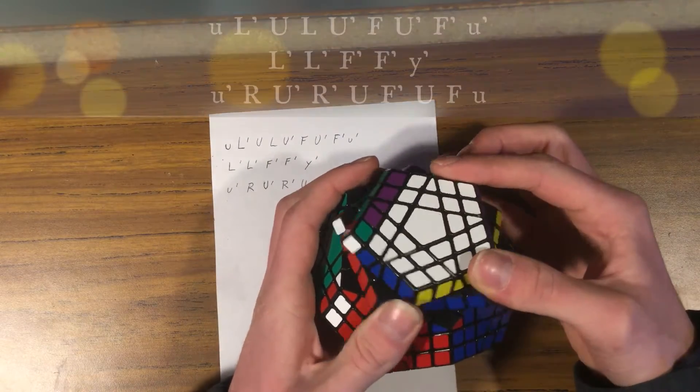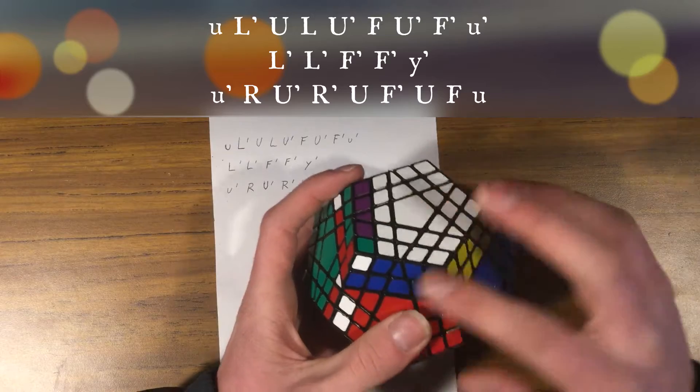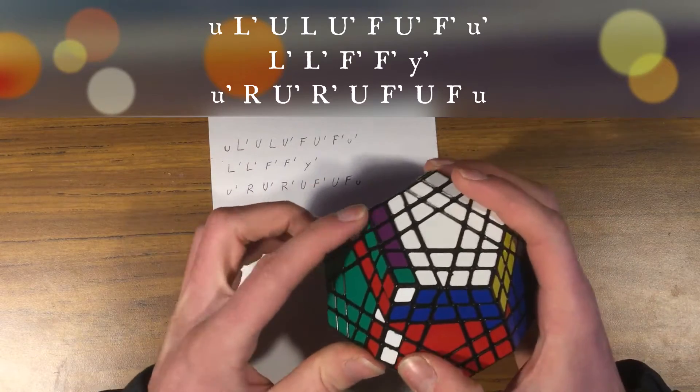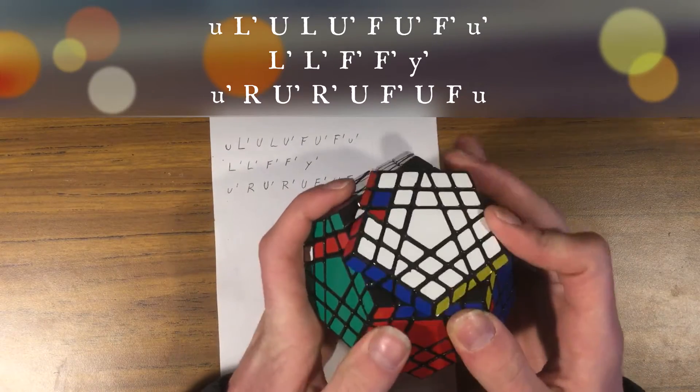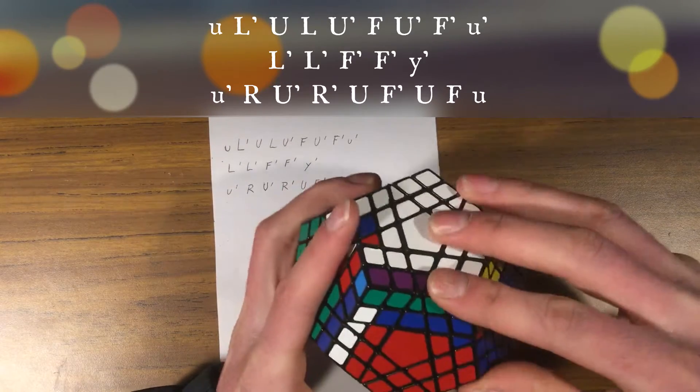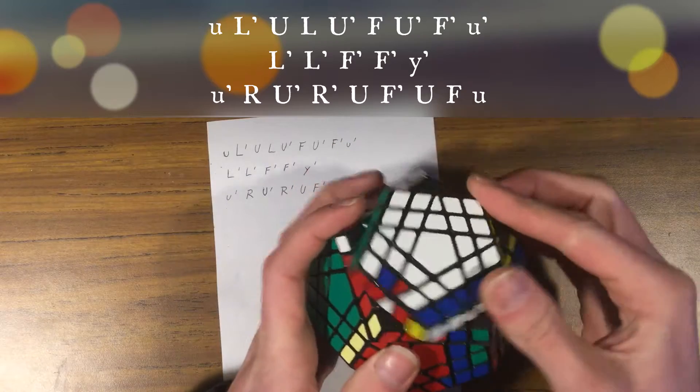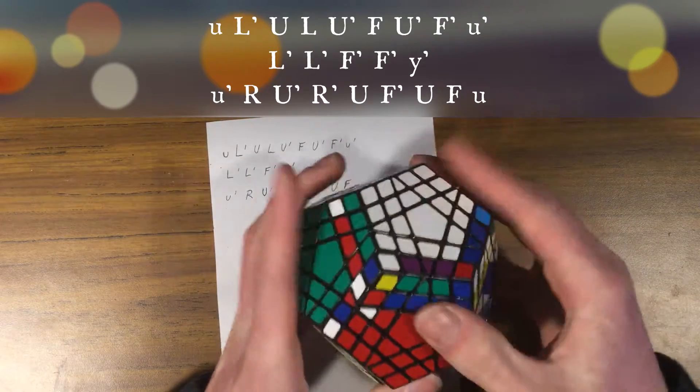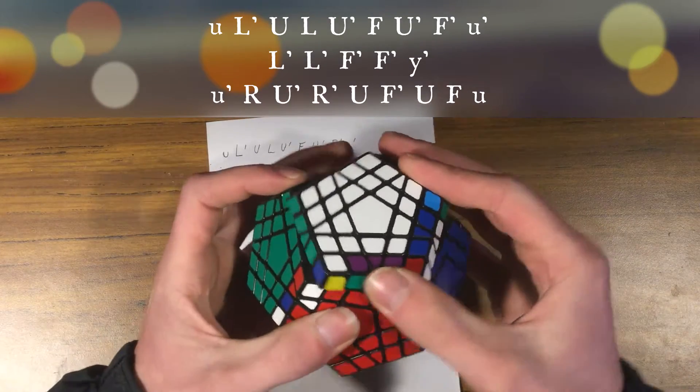So an upper, the middle layer upper, a left inverse, upper, left, upper inverse, and front, upper inverse, front inverse, then the middle upper inverse.